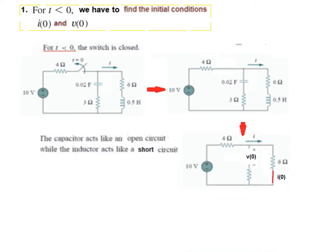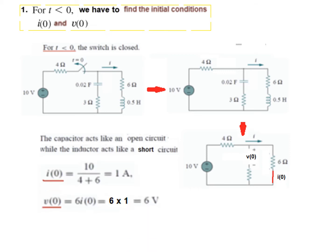So we draw the equivalent circuit: the capacitor is open, charged to initial voltage v0, and the inductor is a short circuit carrying current i(0). Since no current flows through the open capacitor branch, the only loop available gives us i(0) = 10 divided by (4 + 6) = 1 ampere. For v0, the voltage across the capacitor equals the voltage across the 6 ohm resistor: v0 = 6 × 1 = 6 volts.